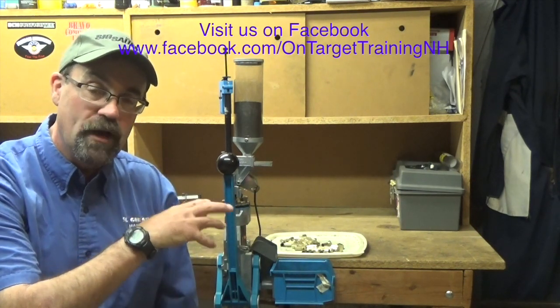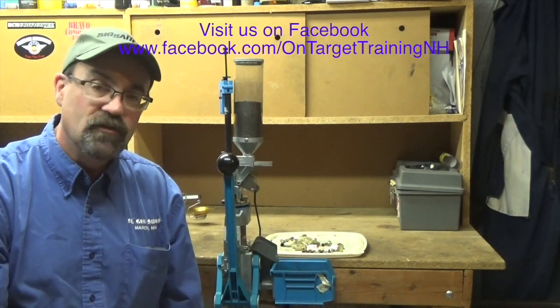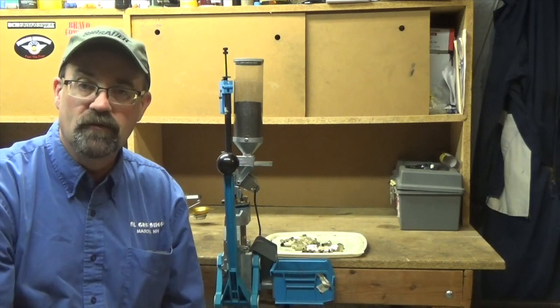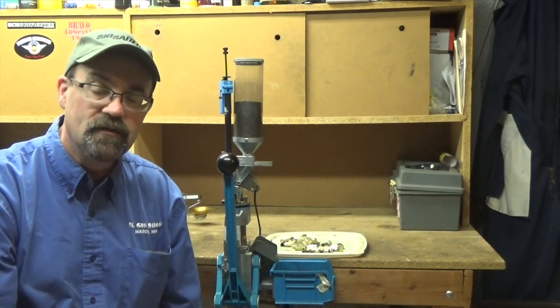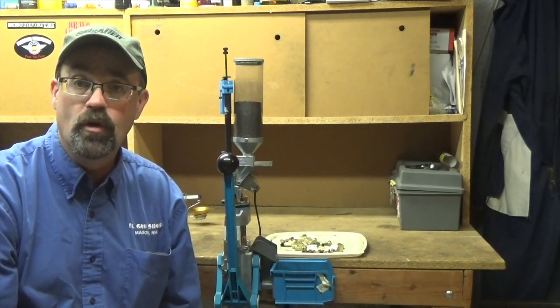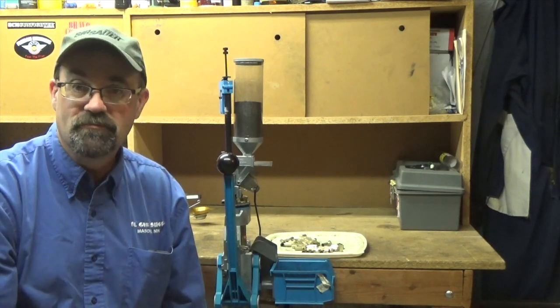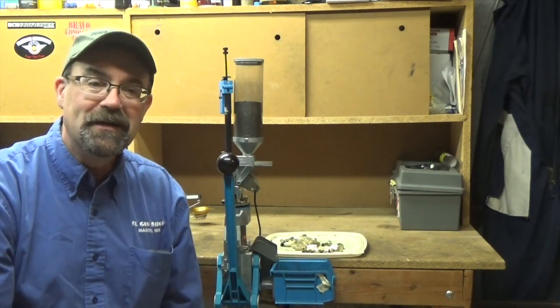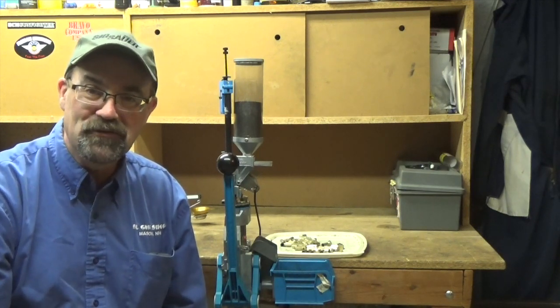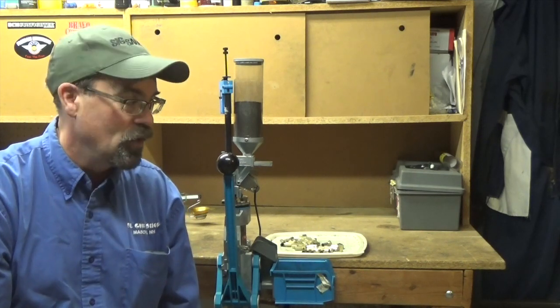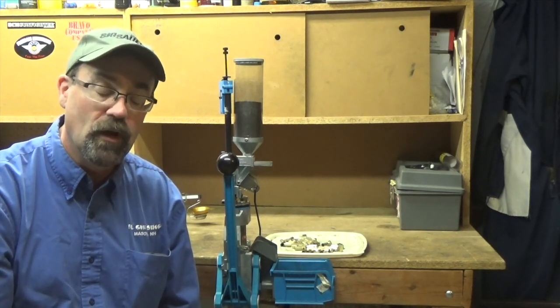This is Dillon's lower end progressive, the square deal B. It's been rebuilt a couple of times. One great thing about the Dillon presses is a lifetime warranty. Something breaks, they fix it. The base broke probably after 80,000 rounds or something, and so they replaced that and at the same time rebuilt the press. Since then it's been great.